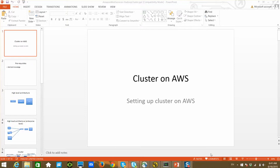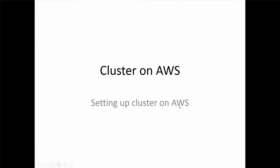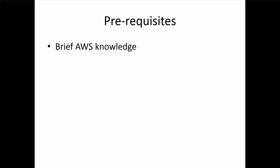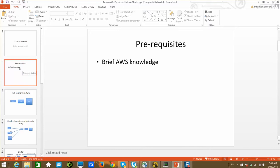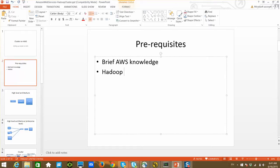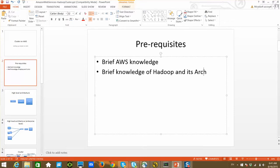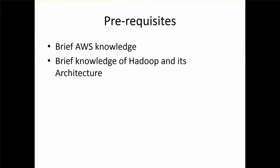I will try to cover all the important components as part of this series. So, what you need to have? Let me start with prerequisites. You just need to have basic knowledge of AWS and also by this time you should be familiar with Hadoop architecture — brief knowledge of Hadoop and its architecture. No need to be very detailed.